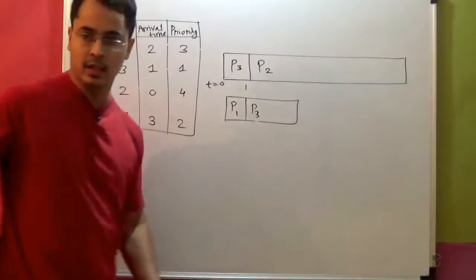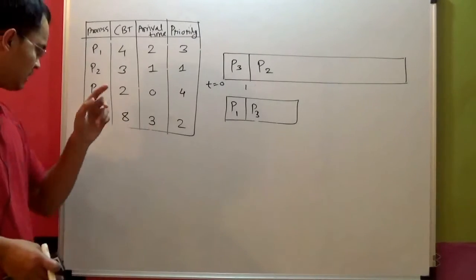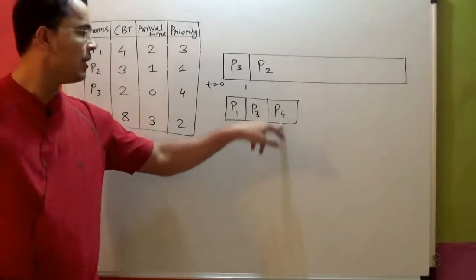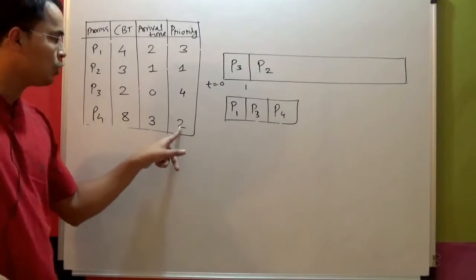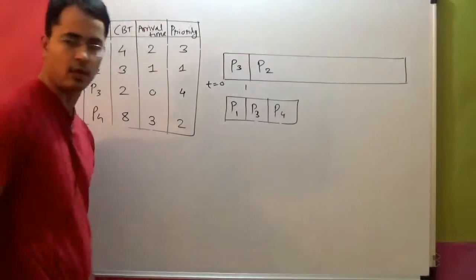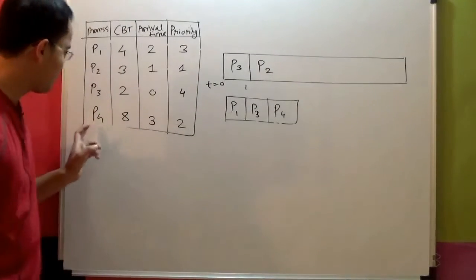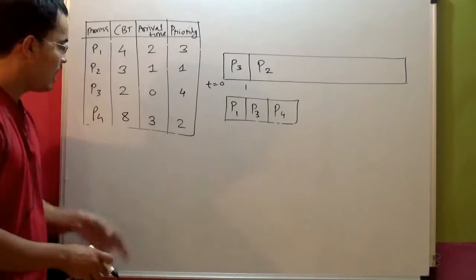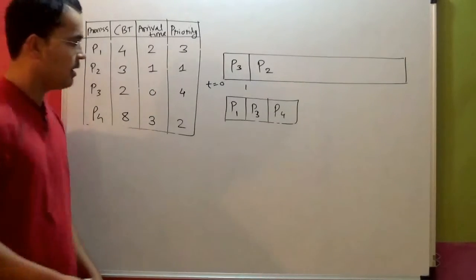Now this will remain as it is till time equal to 3 seconds. At time equal to 3 seconds, there is one more process arriving, P4. First compare the priority of P4 with the process under execution, that is P2. P2's priority is 1, P4's priority is 2, so priority of P2 is higher than P4, so P2 will remain as it is and P4 will go in the queue. But in the queue where will P4 go in relation to P1 and P3? Priority of P4 is 2, P3 is 4, and P1 is 3. So P4 is having higher priority than both P1 and P3, so P4 goes before P1 and P3 in the queue.